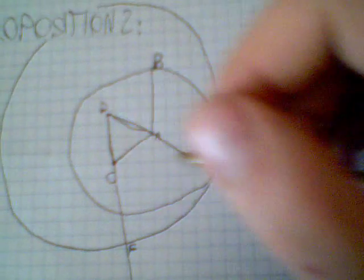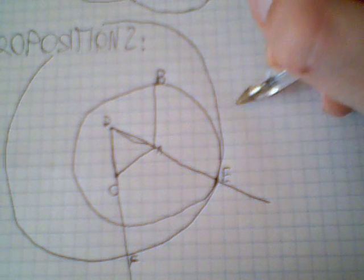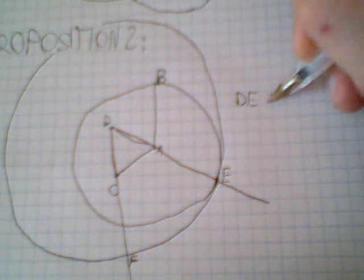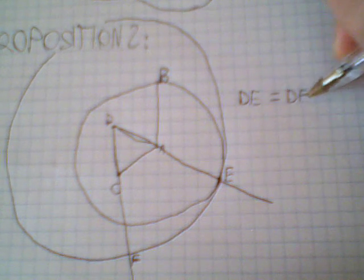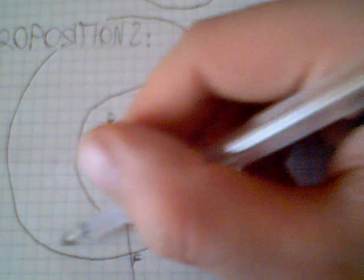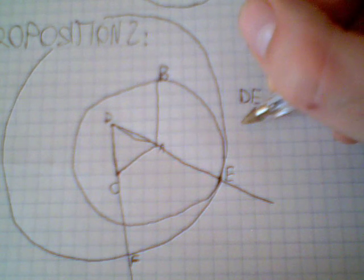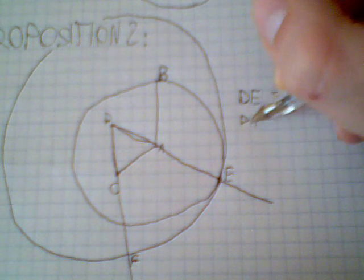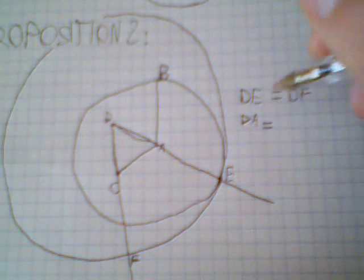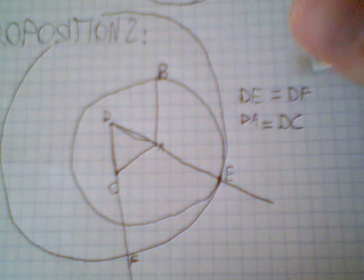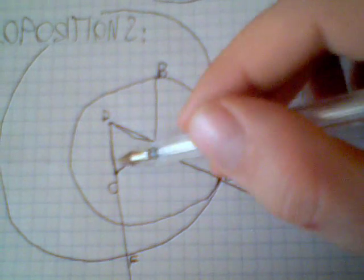I have that DE is equal to DF because they are radii of this circle and DA is equal to DC because this triangle is equilateral.